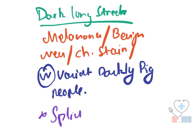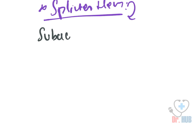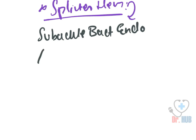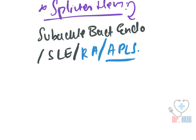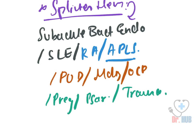Next we look at splinter hemorrhage. Splinter hemorrhage indicates subacute bacterial endocarditis, SLE, rheumatoid arthritis, antiphospholipid syndrome, peptic ulcer disease, malignancy, oral contraceptive use, pregnancy, psoriasis, and trauma.